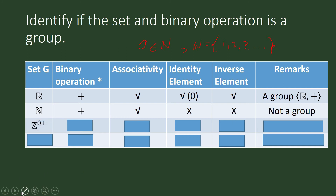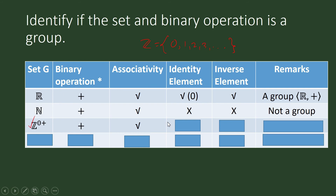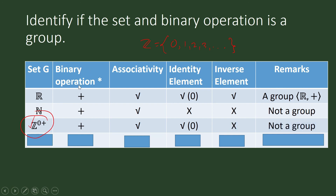How about the set of whole numbers under the binary operation of addition? The set of whole numbers contains zero and the positive integers. Is addition associative? Yes. Does it have an identity element? Yes, now it does because we included zero. But how about the inverse element? Given a positive integer, can you find its inverse here under addition? You would need a negative integer, and this set does not contain negative integers. So the set of whole numbers under addition is not a group.